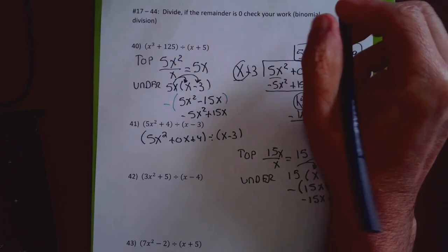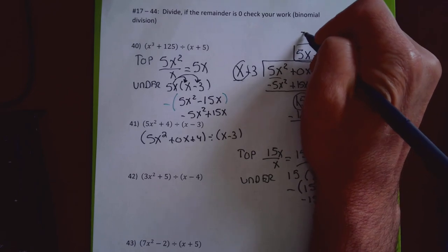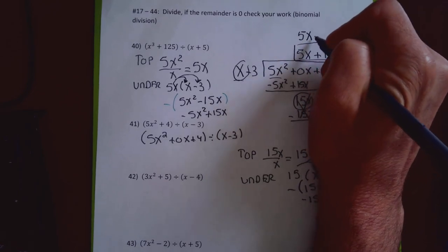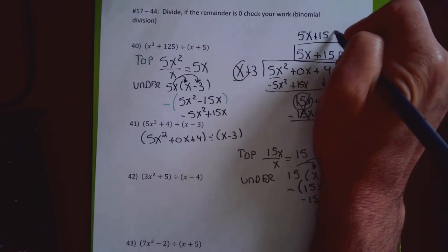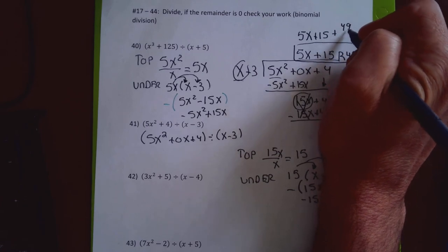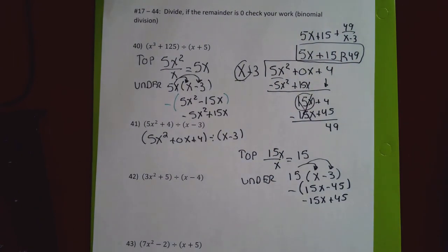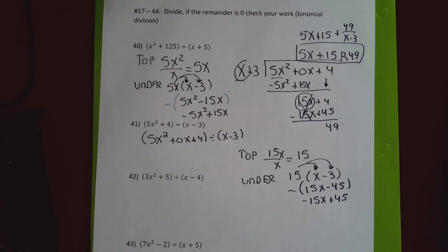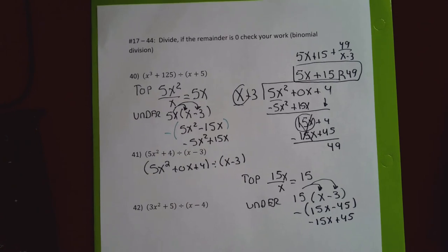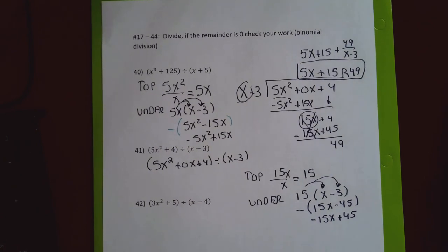That would be a perfect answer. The alternative form is 5x plus 15 plus 49 over x minus 3. I'm so glad to be done with this — it's one of the lectures I really don't like to do because it's such an intense long lecture. That's the end of this section and all the material for the chapter. Anything after this is just preparing for the test.